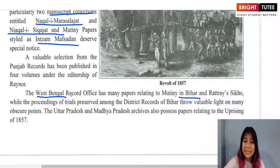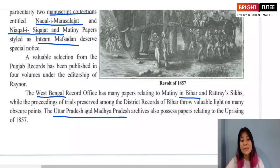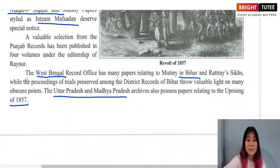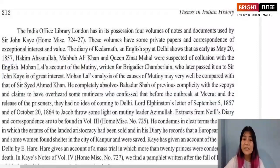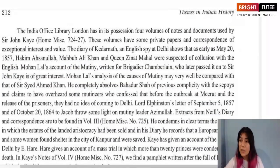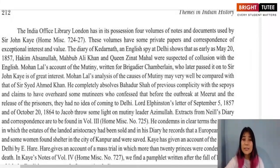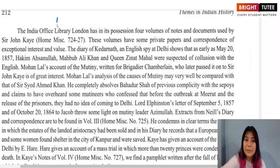In the states of Uttar Pradesh and Madhya Pradesh, their respective archives also contain many papers related to the events of 1857. Apart from regional archives, in London there is a major archive called the British Library.